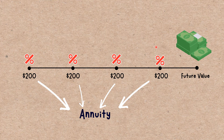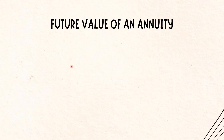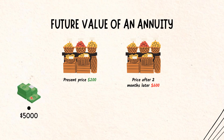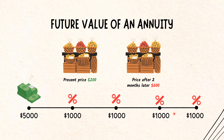Understanding the future value of an annuity: Because of the time value of money, money received or paid out today is worth more than the same amount of money will be in the future. That's because the money can be invested and allowed to grow over time. By the same logic, a lump sum of $5,000 today is worth more than a series of $5,000 annuity payments over 5 years.